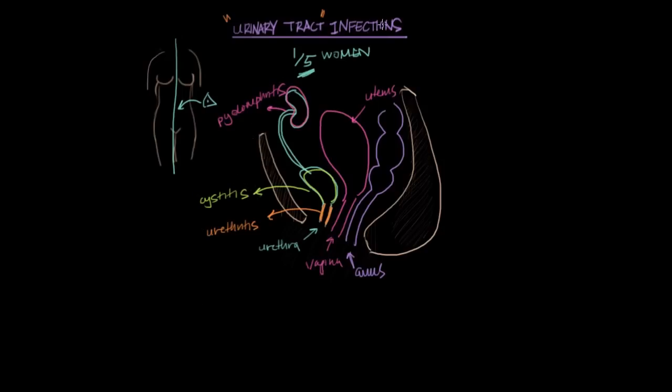And the word infection implies some sort of pathogen, some bacteria of sorts. And the bacteria in this case is usually E. coli, which comes from contamination from feces from back here in the anus. And that actually explains why UTIs are so common in women.